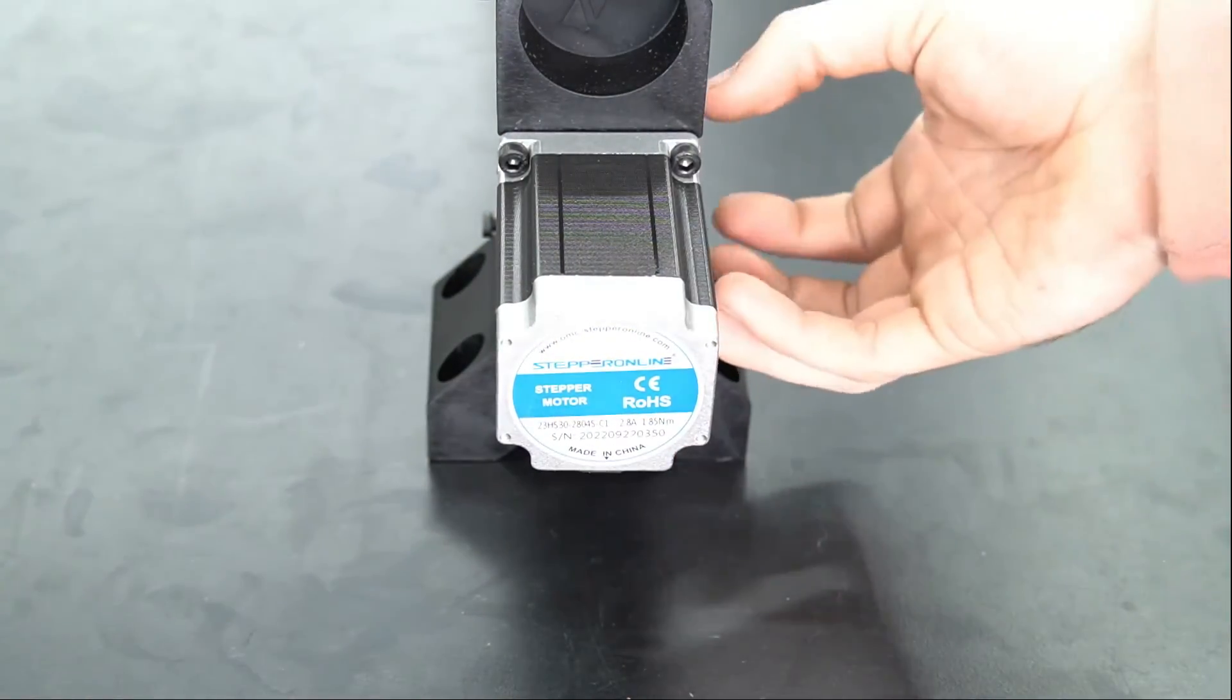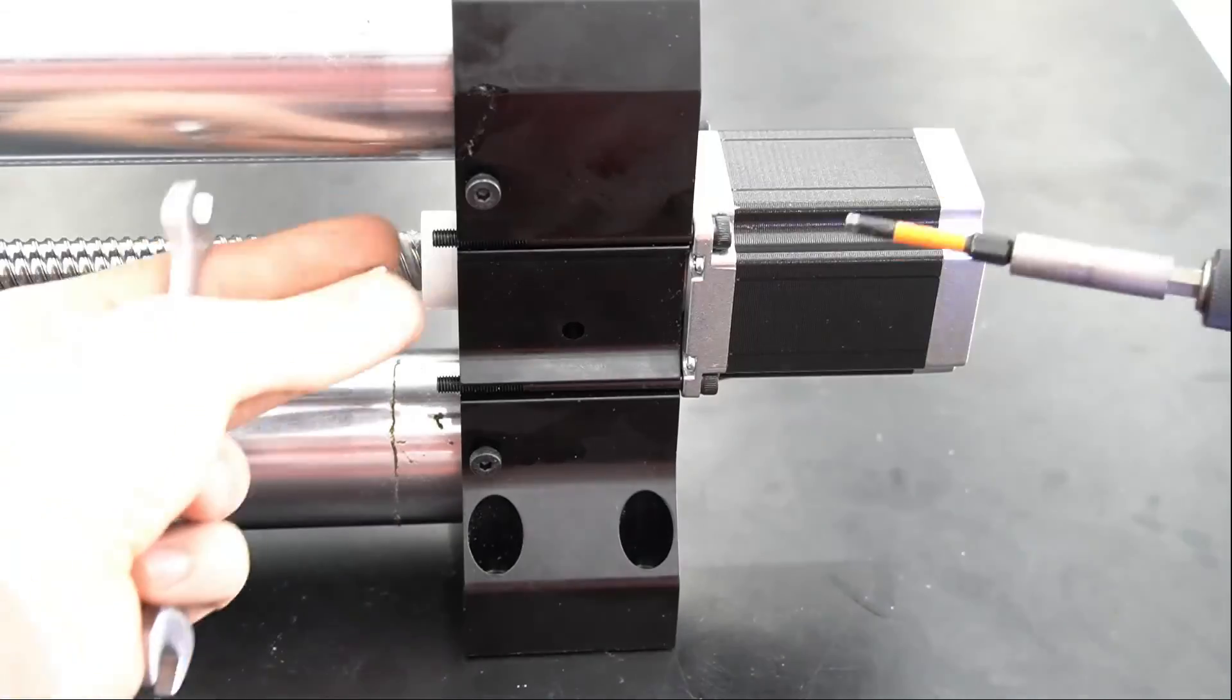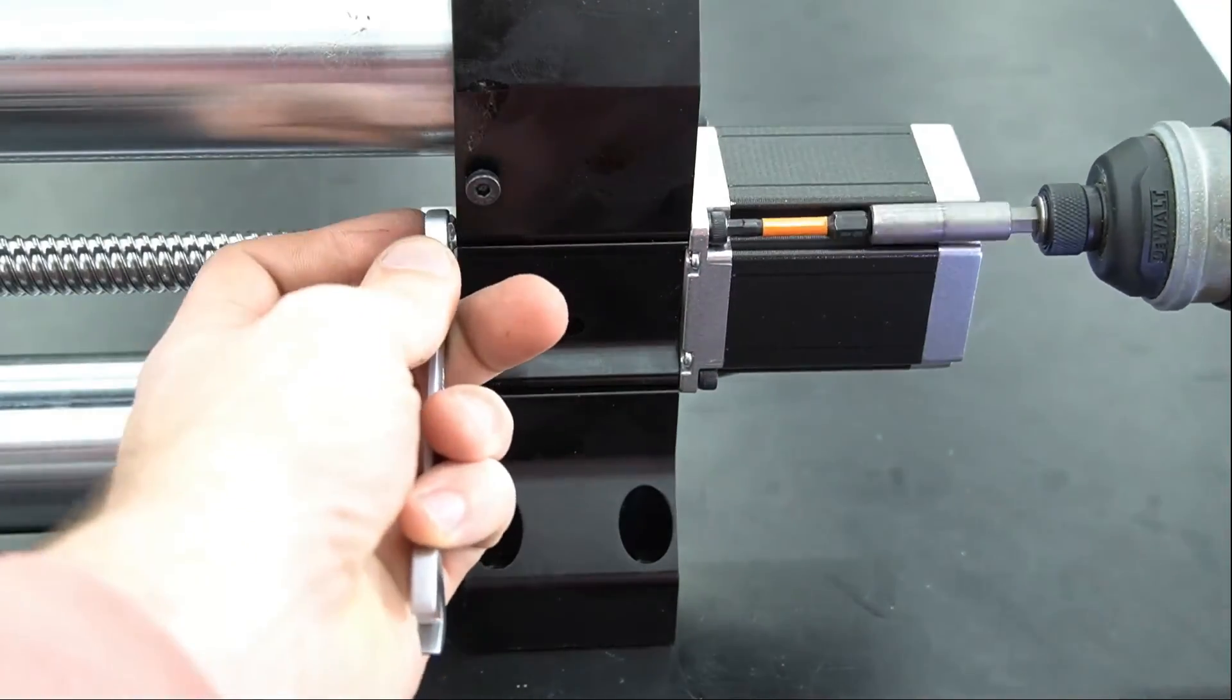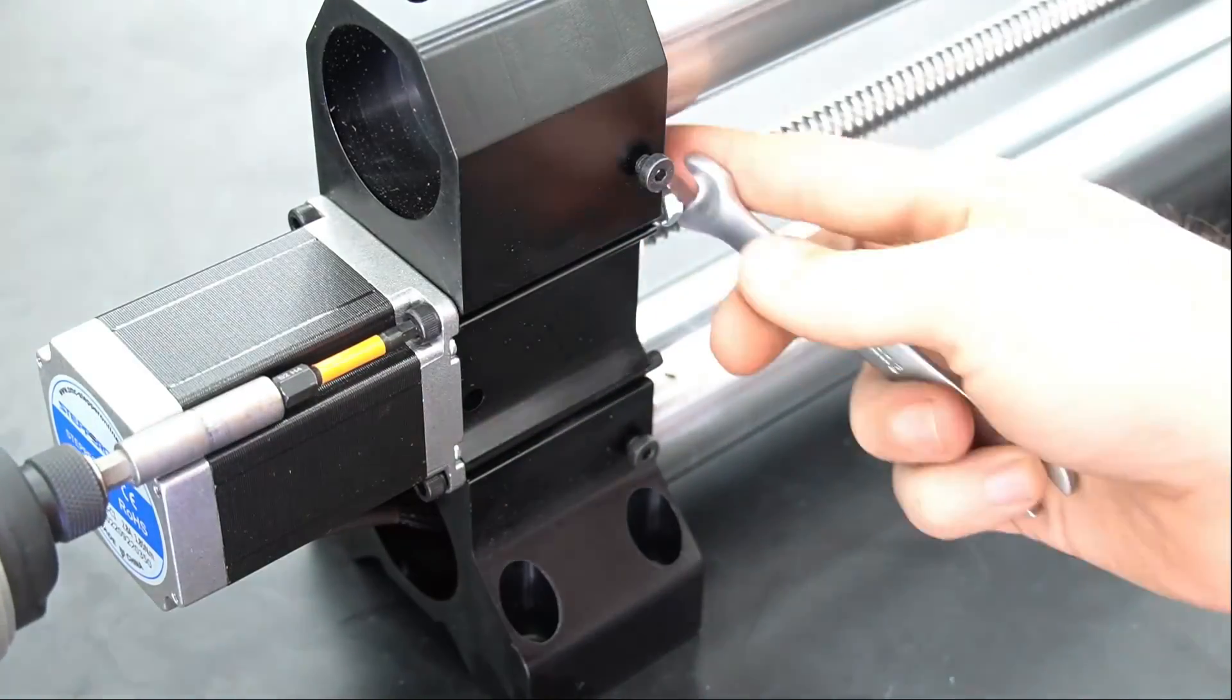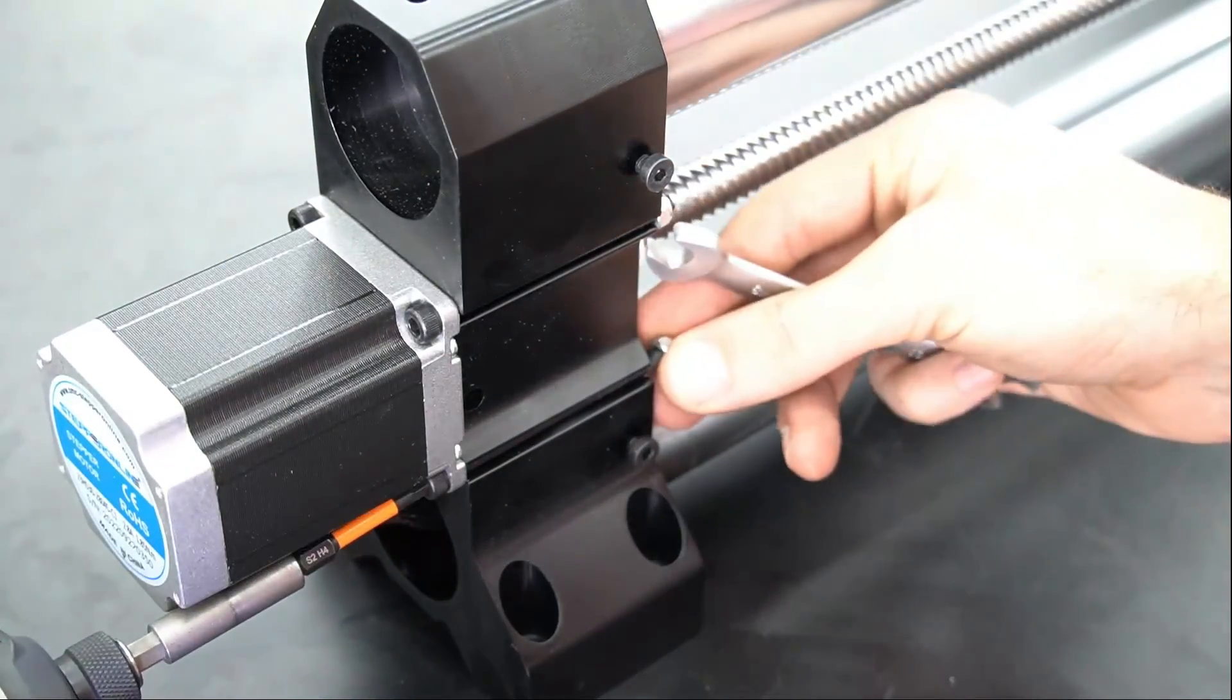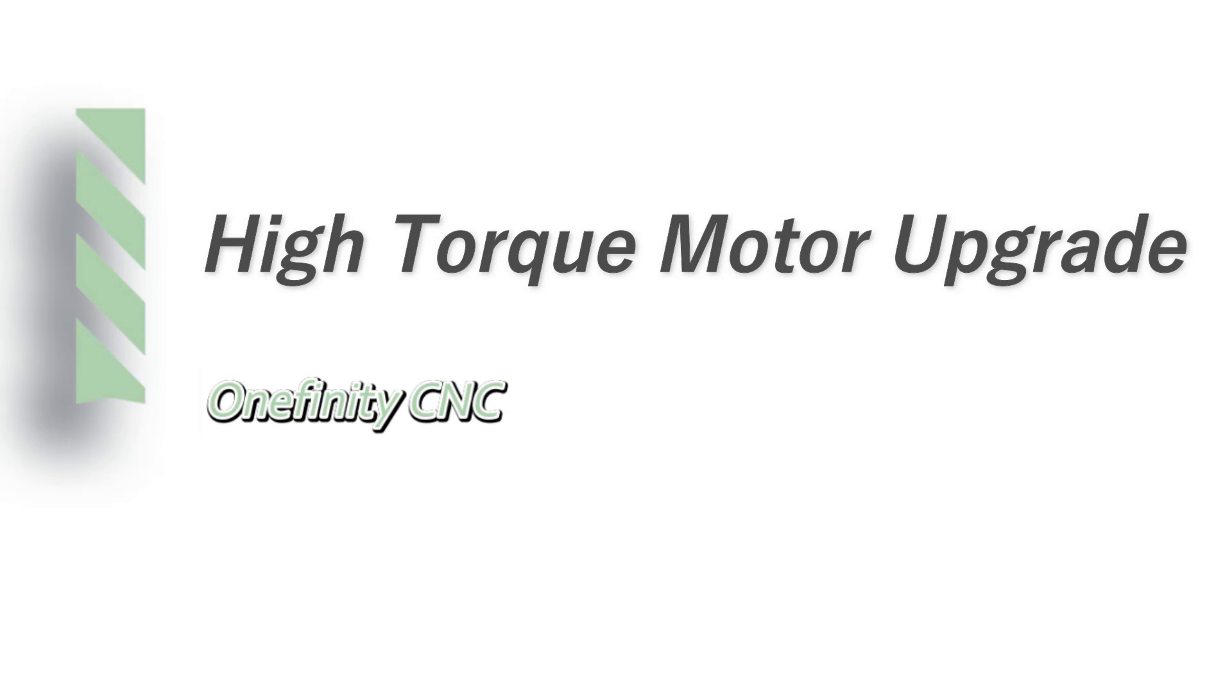Now we'll reinstall our bolts and nuts, so we'll use our four millimeter hex key and our eight millimeter wrench again to tighten those down. Once those are tightened down, that completes the upgrade from the normal NEMA 23 stepper to the high torque NEMA 23 stepper motor. Thanks for watching!